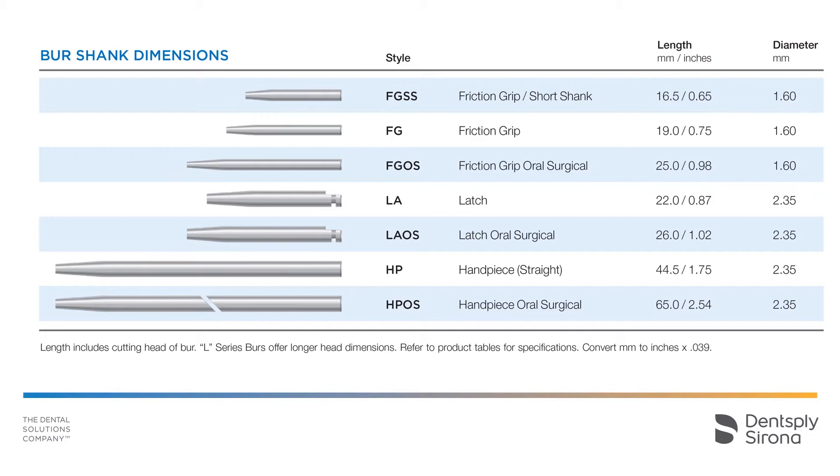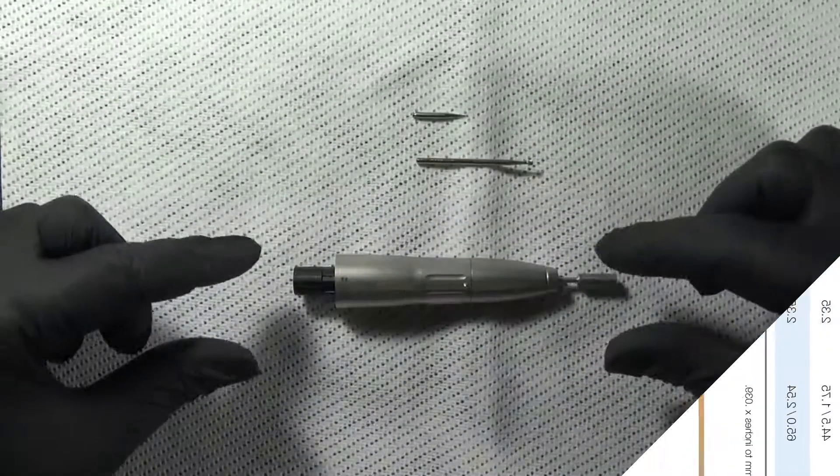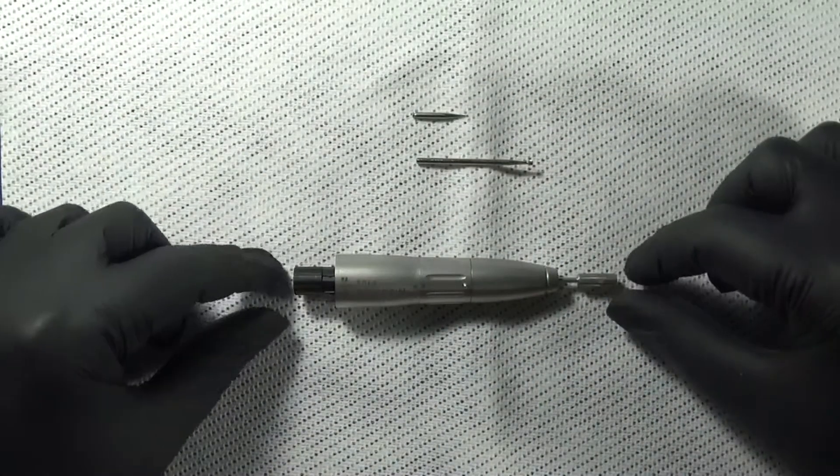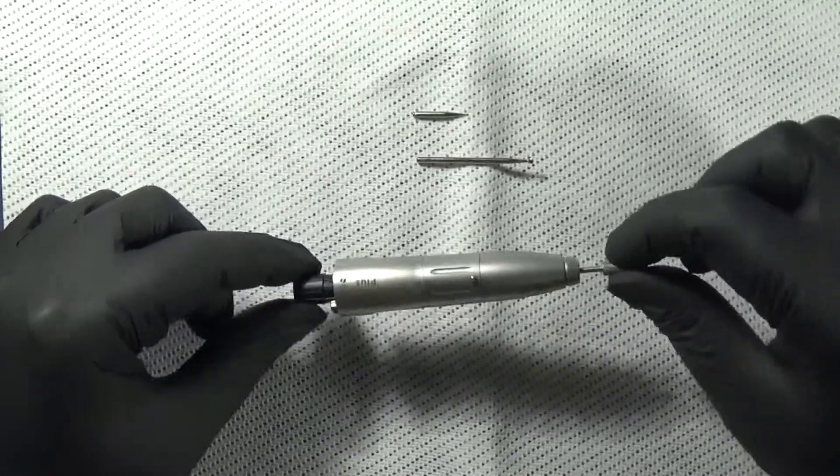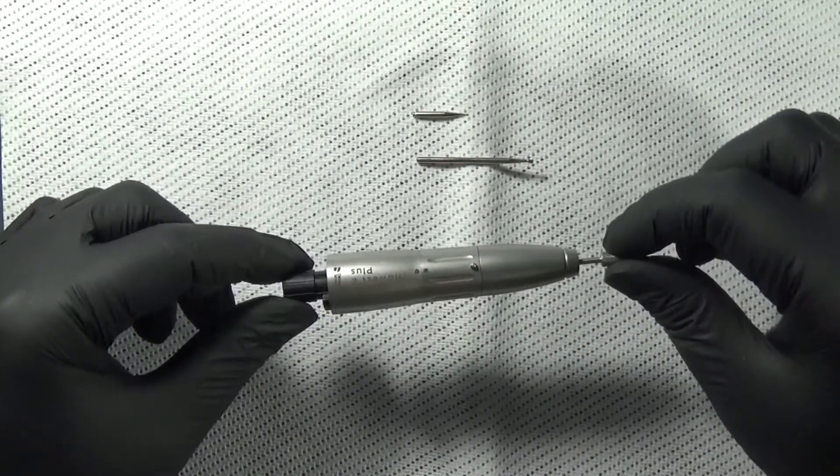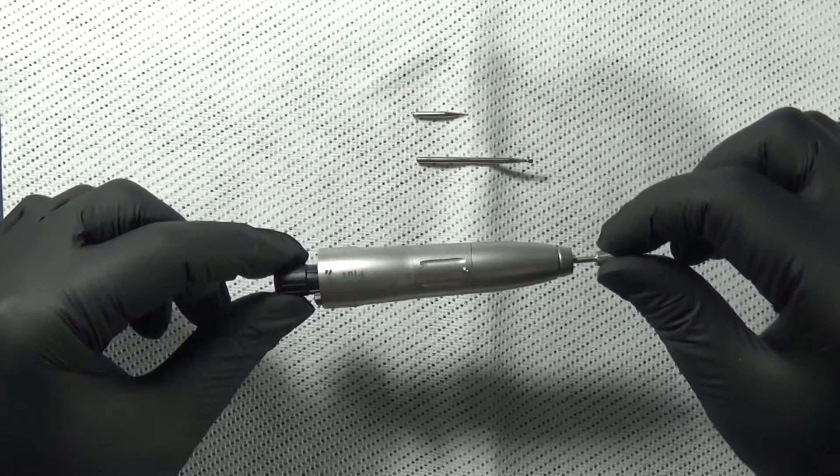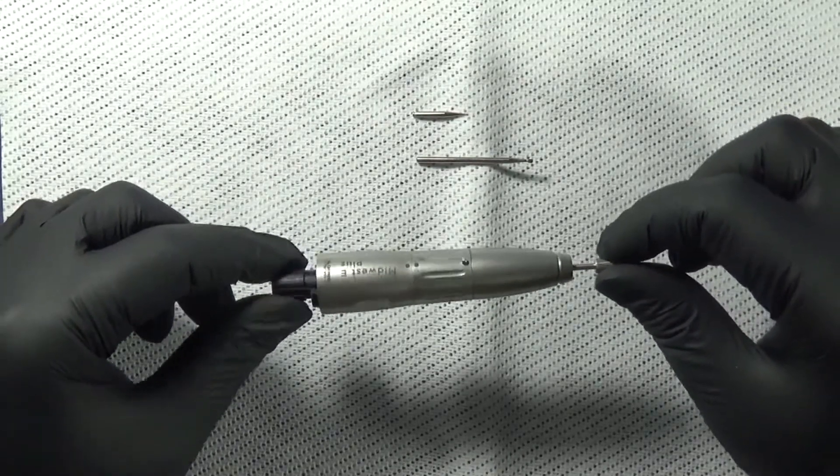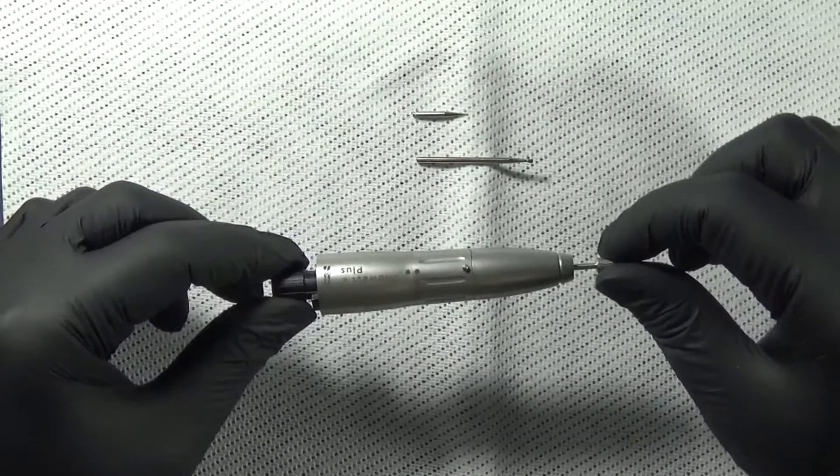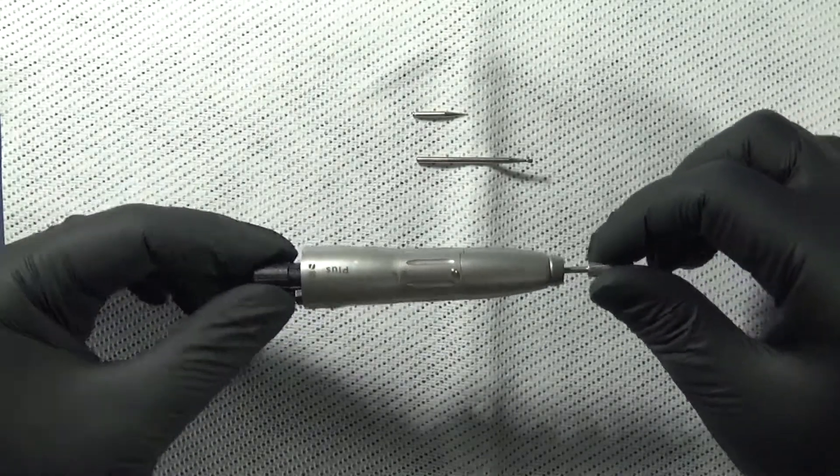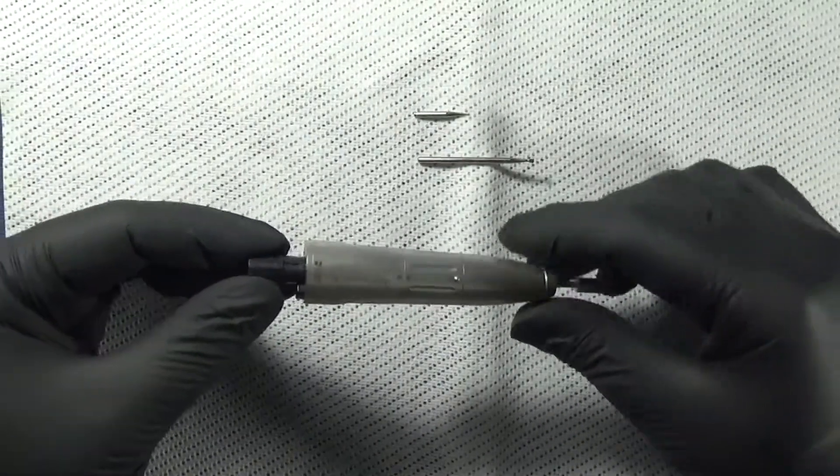We've got our Midwest E Plus straight attachment here is what we're going to take a look at today, but this would apply the same to the Rhino XE or the K-type low-speed air straight attachments also.